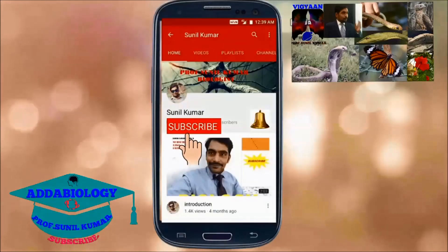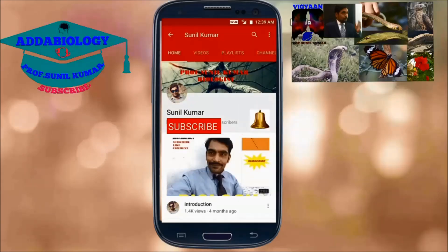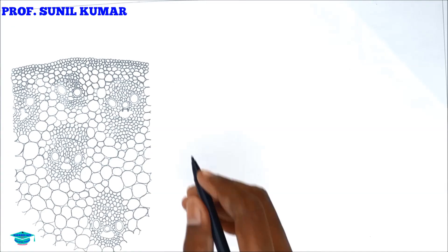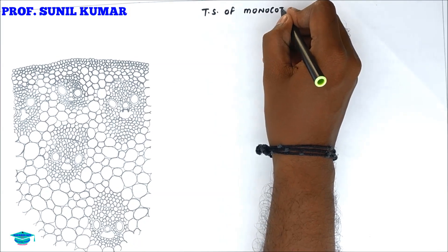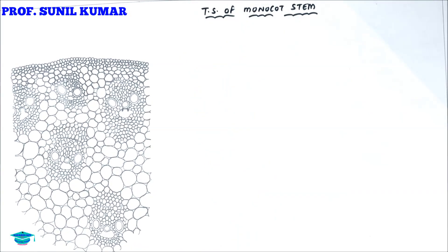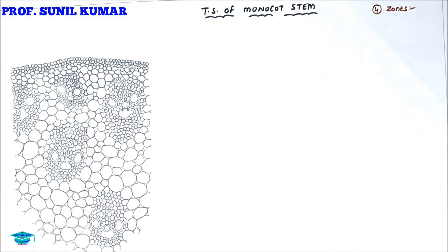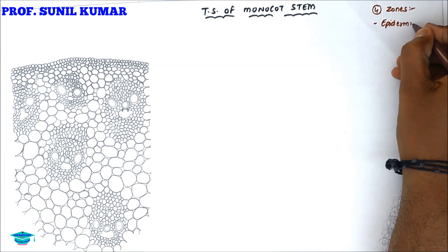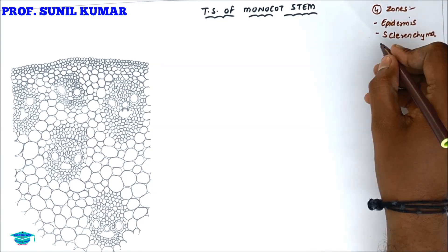Hello friends, I'm back with a new video. This video is going to talk about the TS of monocot stem. When we talk about monocot stem, first we need to understand there are four zones: first is epidermis, second is sclerenchyma, third is ground tissue, and the fourth one is vascular bundle.